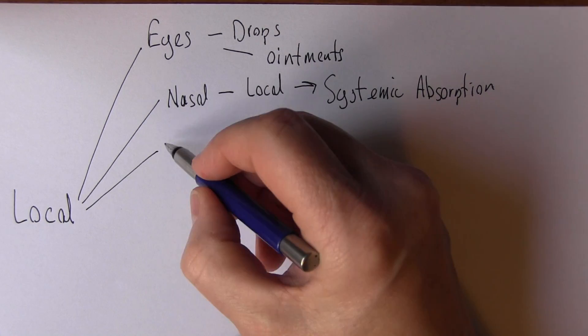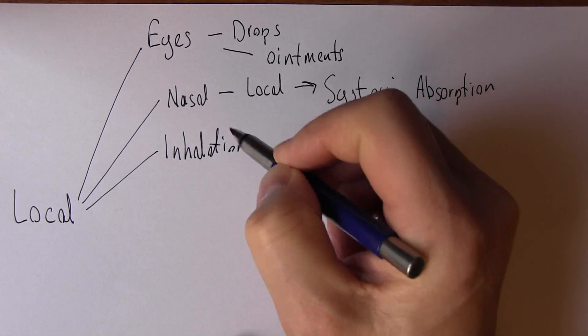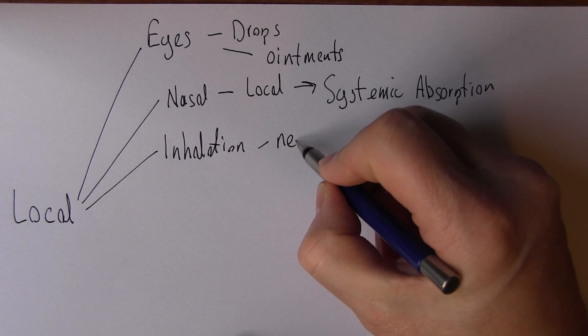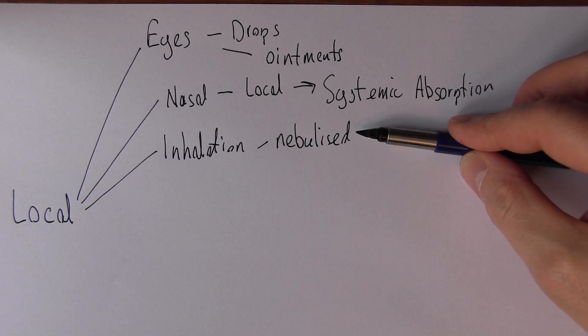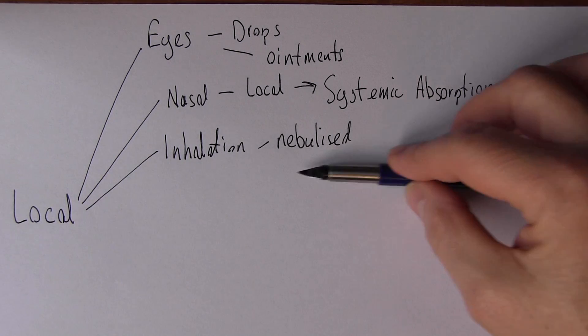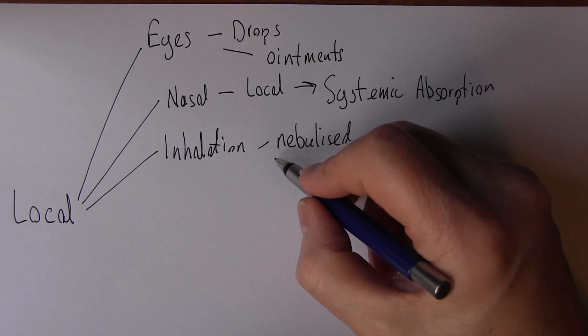Another one is inhalation, inhaling drugs. You might think of nebulizers. We might nebulize salbutamol or ipratropium. The idea here is that the nebulized drug goes down into the bronchioles, the small bronchial passages, and facilitates bronchodilation. Or we might give steroid inhalers to reduce inflammation, via nebulizers or sometimes via puffers.